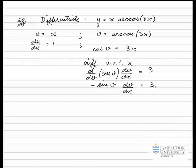The third step in the process was to rearrange the derivative to get dv/dx by itself. So I'll simply just divide both sides by the minus sine v, and dv/dx will equal negative 3 divided by sine v. So that's good, we've got an expression for dv/dx.